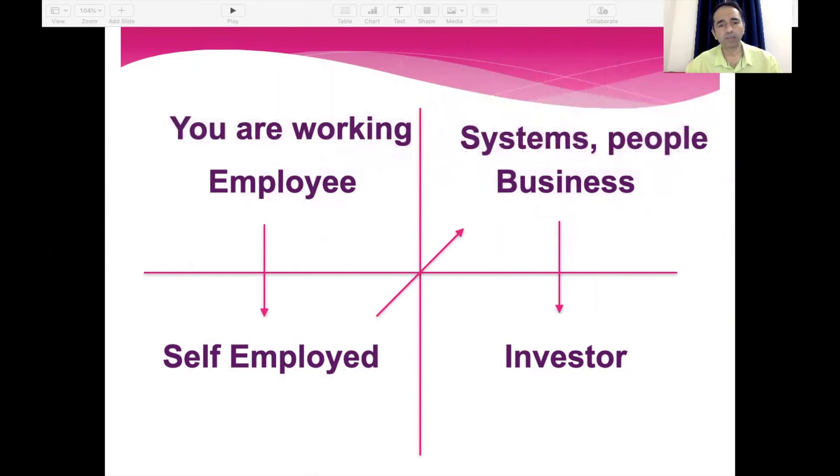The first point is where you're working. Then you move on to self-employed. And the third point is where systems and people are working for you, so you have a system or a process in place. And the last point is where you invest, and that's again connected to financial freedom. You invest in particular assets or resources where then money starts giving you returns and a passive income starts developing.